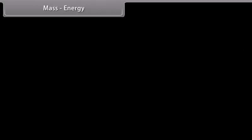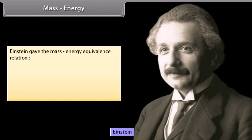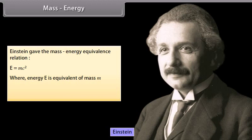Mass-energy: Einstein gave the mass-energy equivalence relation E is equal to MC squared, where energy E is equivalent of mass M. C is the velocity of light in vacuum, that is 3 into 10 raised to the power 8 meters per second.